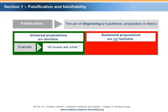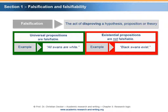Existential propositions are not falsifiable. An example of an existential proposition is 'black swans exist.' This sentence is not falsifiable, either because of the proof that black swans exist, or because of the possibility that someone might prove the existence of black swans. The problem of falsifiability becomes clearer if you change the sentence to 'blue swans exist.' Nobody knows whether blue swans exist or not — there is always a possibility that someone discovers a blue swan.